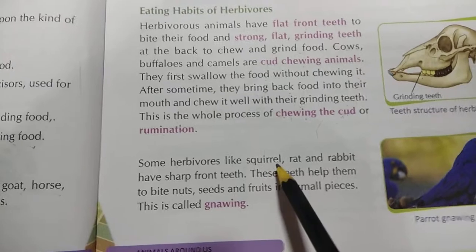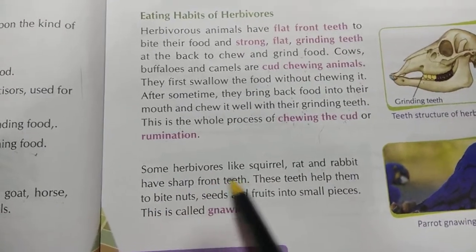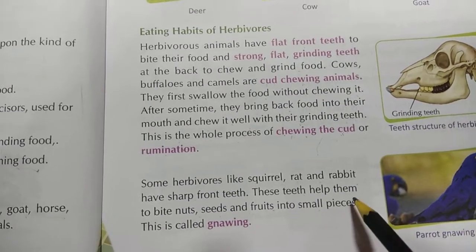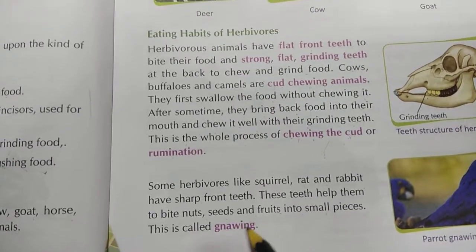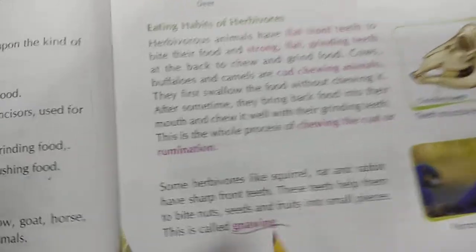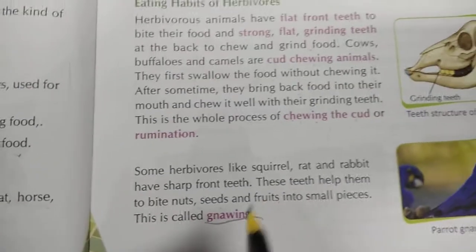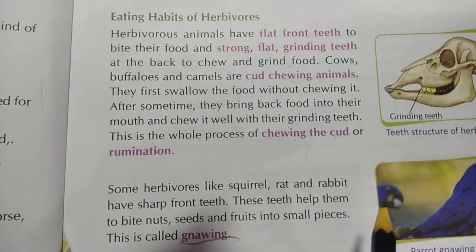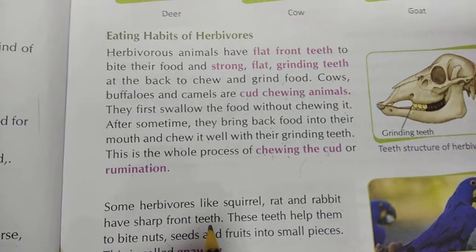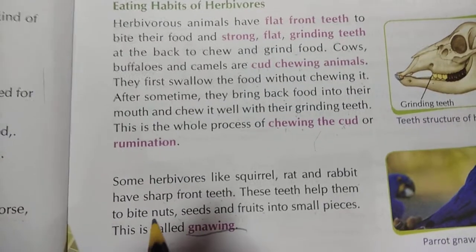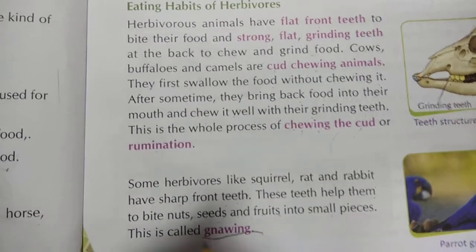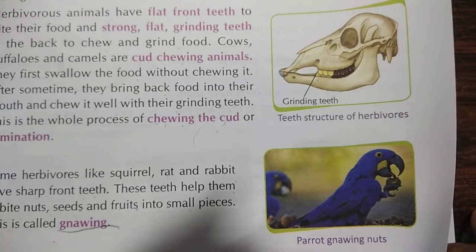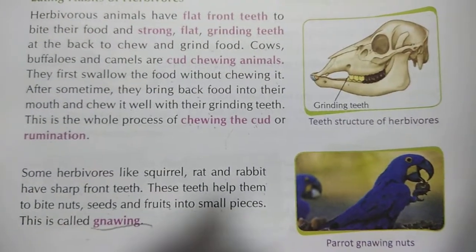Some herbivores like squirrel, rat and rabbit have sharp front teeth. These teeth help them to bite nuts, seeds and fruits into small pieces. This is called gnawing — the G is silent. Like a squirrel, rat or rabbit, their mouths are small but their front teeth are very sharp. Using these sharp teeth, they bite nuts, seeds and fruits into small pieces. This is called gnawing. You can also see a parrot eating nuts with its sharp beak.